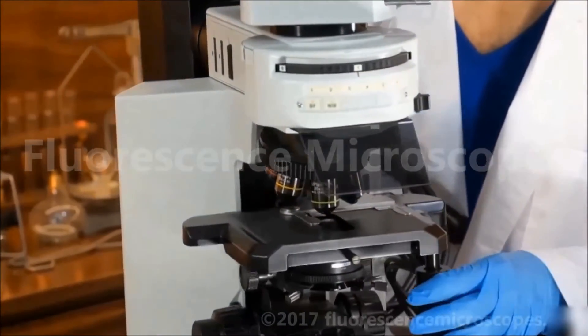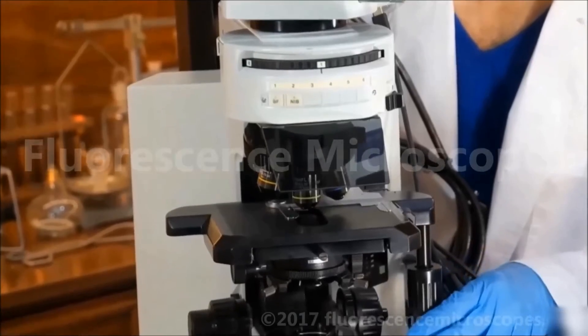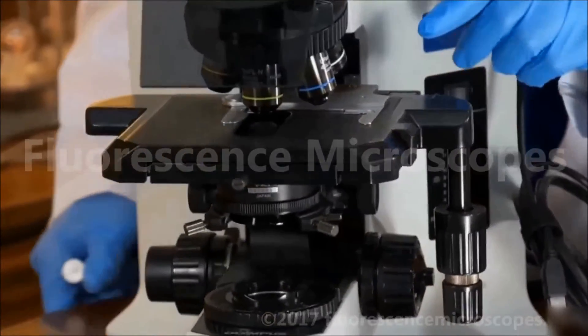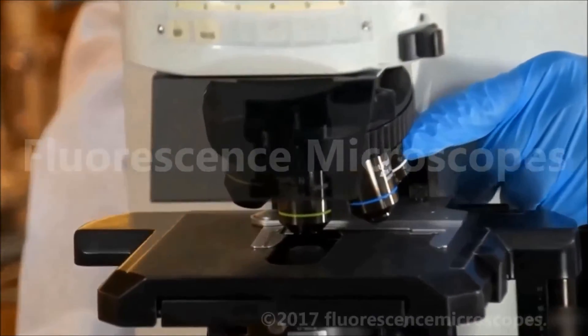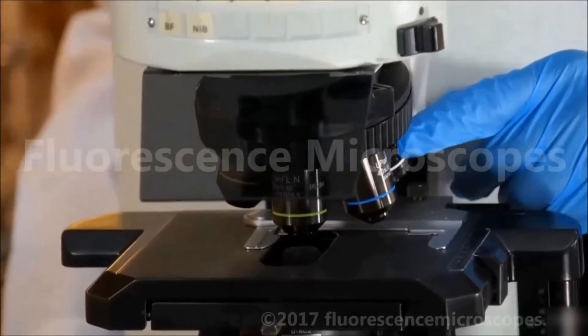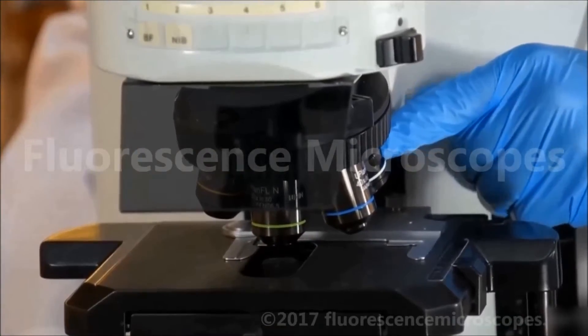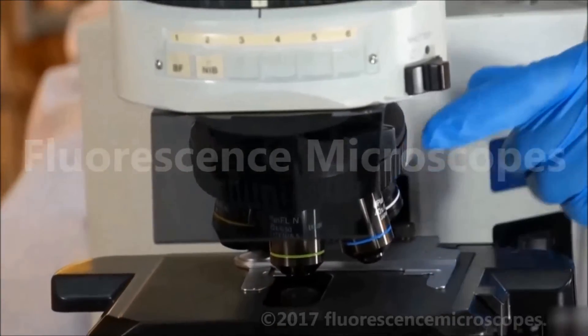We have a right hand XY stage. We also have a 100X with an iris. This iris is good for cutting out the extraneous light to blacken your field so that you're not getting too much light.